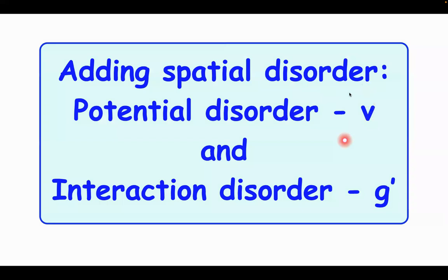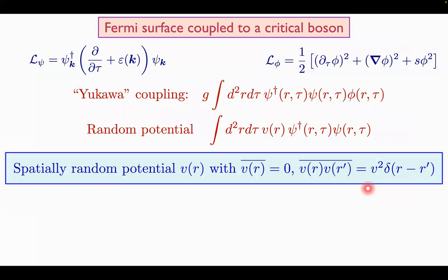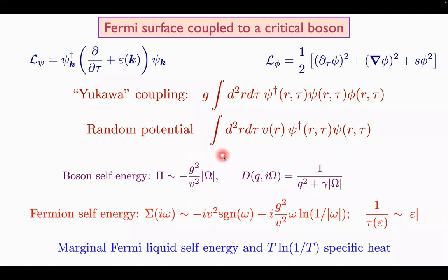So it'll turn out we have to add two types of disorder. There's a potential disorder, which is the usual disorder. That's in the theory of localization or disordered Fermi liquids, that's V. But here we also have to consider disorder in the Yukawa coupling, which are called G prime. So first let's add potential disorder. So if I take this theory of a non-Fermi liquid, the first two lines, and add some random potential disorder. So V of R is spatially random and has a mean square value V. So this was also presented in a talk in the first day of the conference.